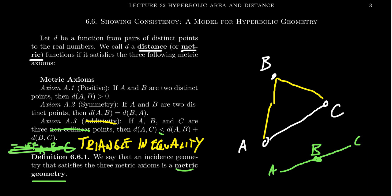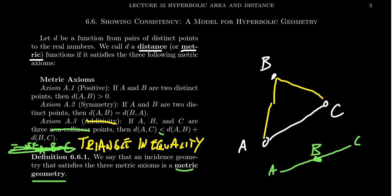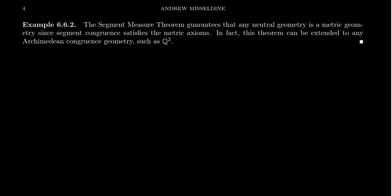And I want to mention that every congruence geometry that we've discussed so far can be given, it's automatically a metric geometry, because I mean, there is an issue about how do you define a number to it. So there's a bit of an issue right there, but it's automatically symmetric and the triangle inequality we actually proved as a theorem. So as long as there's some way of connecting segments to numbers that is a length, then you have metric axioms there. So for example, the segment measure theorem that we did in neutral geometry shows that every neutral geometry is a metric geometry.